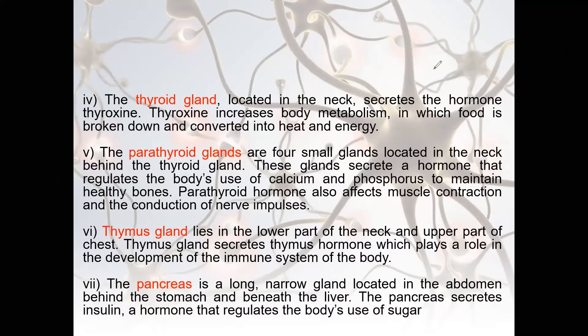Next is the thyroid gland, located in the neck, which releases the thyroxine hormone. Students, remember the name of the hormone and the location. Thyroxine increases the body's metabolism — it helps in metabolism. Metabolism is the overall activities taking place in our body, in which food is broken down and converted into heat and energy.